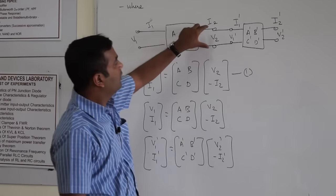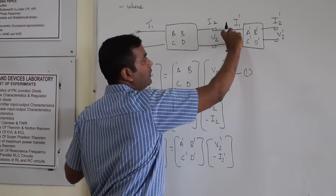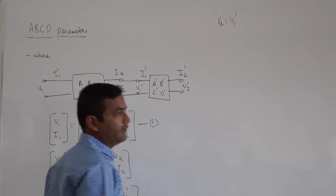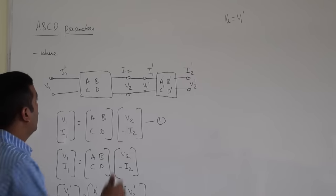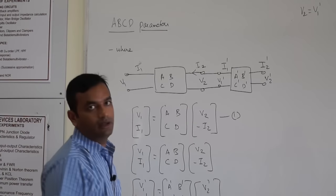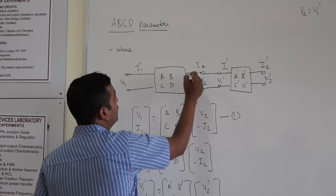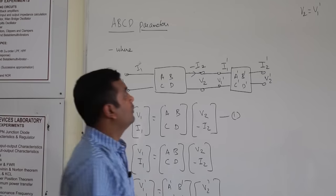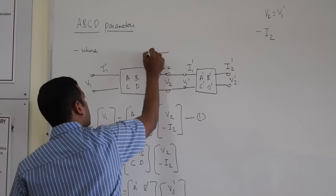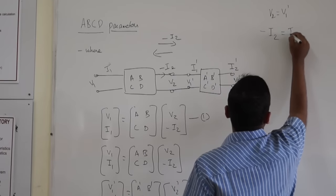Now, look at voltage V2 — the same voltage V2 is applied across the same terminals. So V2 will be nothing but equal to V1 dash. Similarly, if you look at current I2: I2 is heading inside the port, but we have minus I2 here. So minus I2 indicates the direction of current flowing out, meaning minus I2 will be the current entering into the second network.